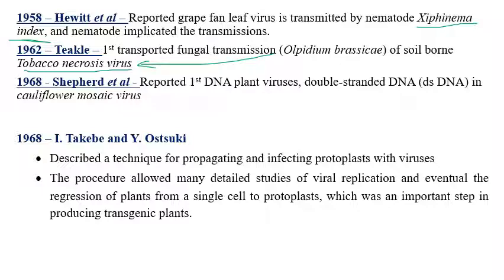Shepherd in 1968 first reported that plant DNA viruses exist. Before this discovery, all known plant viruses contained RNA as genetic material. Shepherd showed that plant viruses can also contain double-stranded DNA as genetic material, first demonstrated in Cauliflower mosaic virus. This was a landmark discovery — Cauliflower mosaic virus contains a double-stranded DNA genome.